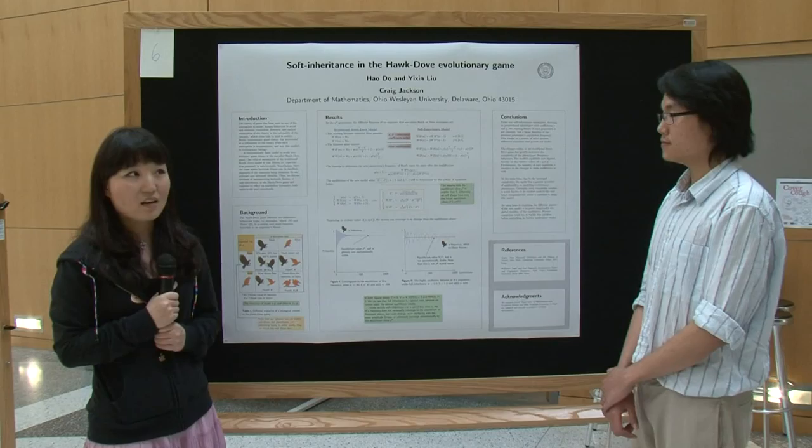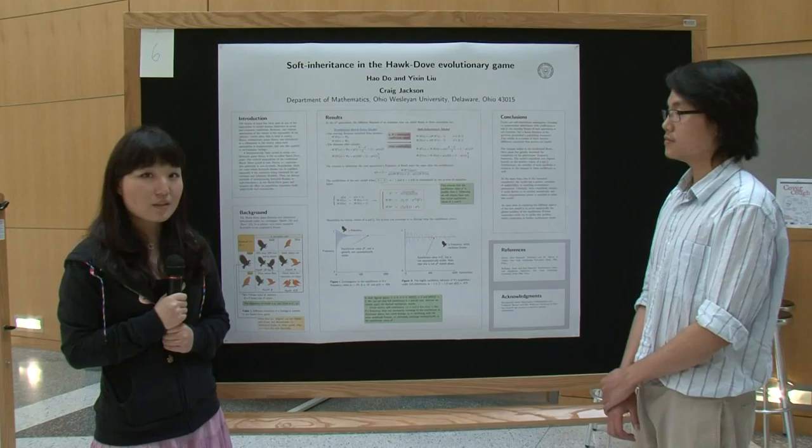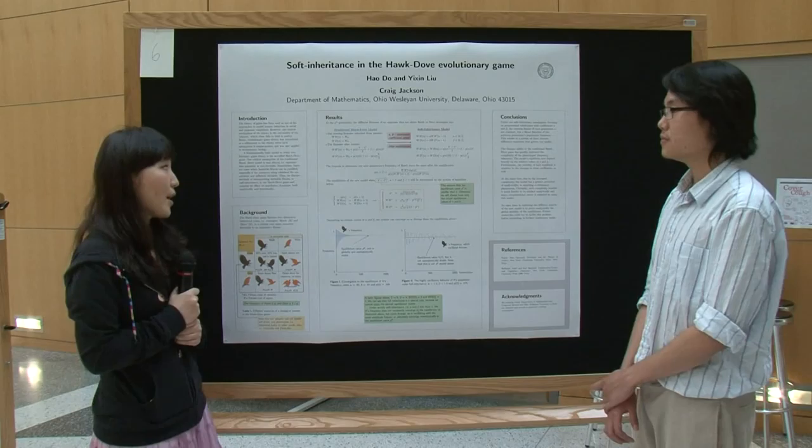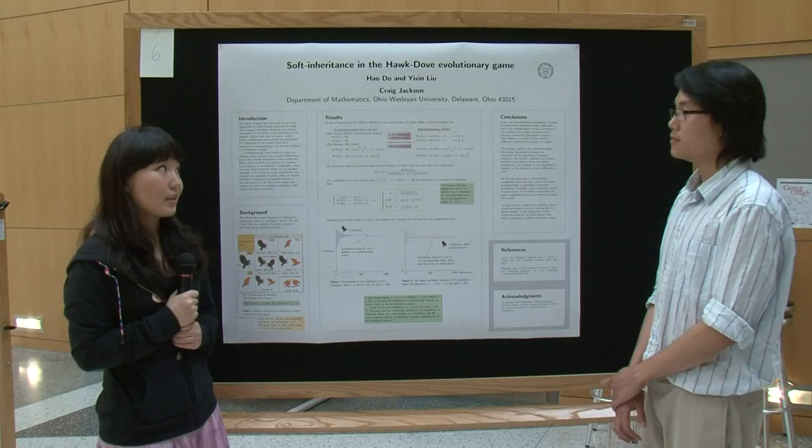What does fitness mean? According to Darwin's definition, fitness is the organism's ability to survive and reproduce. But in the hawk and dove game, fitness is non-heritable. We think that in some cases, fitness can be heritable.